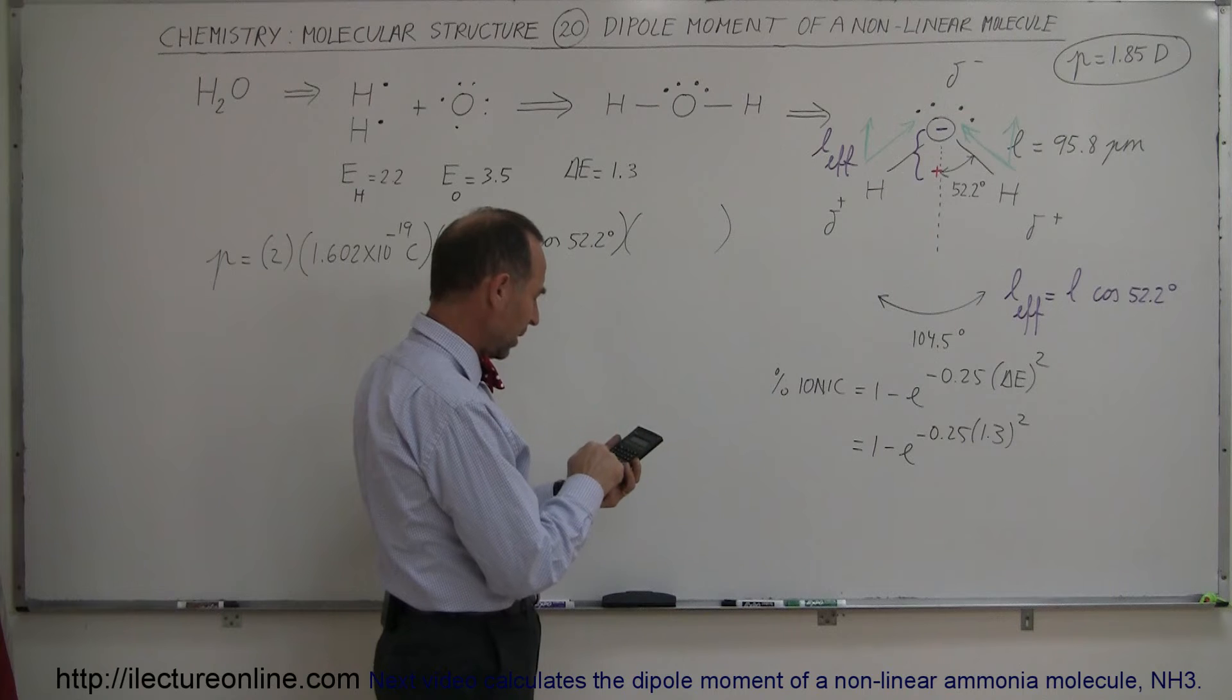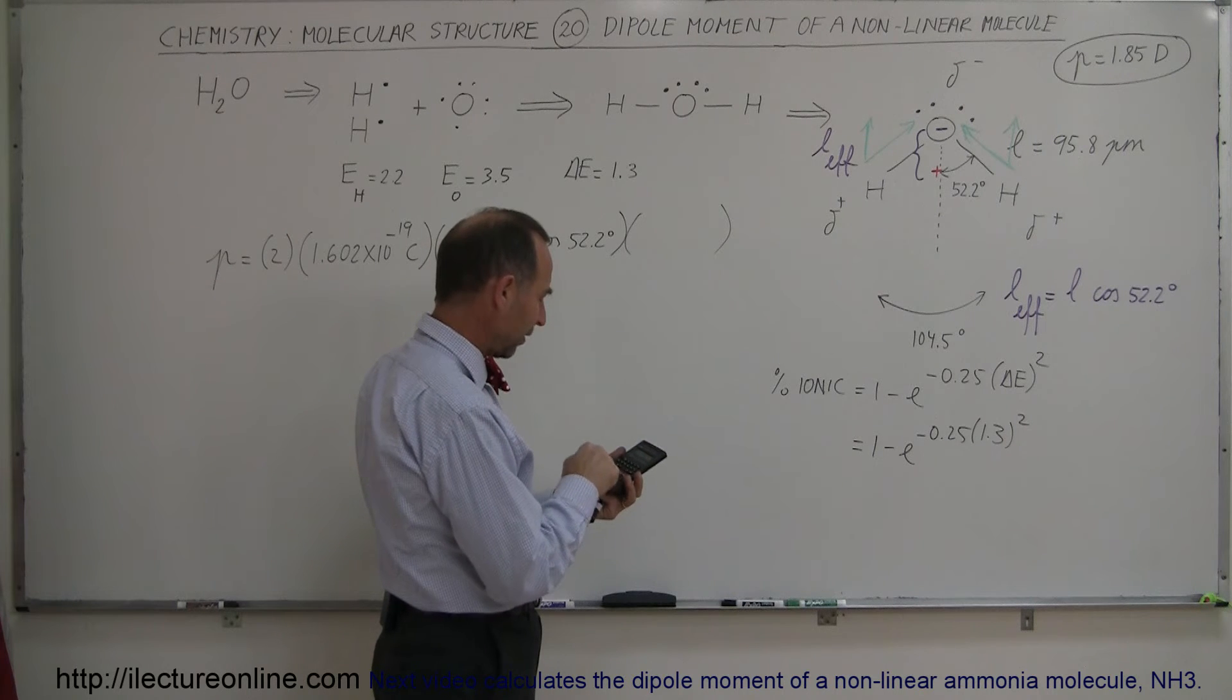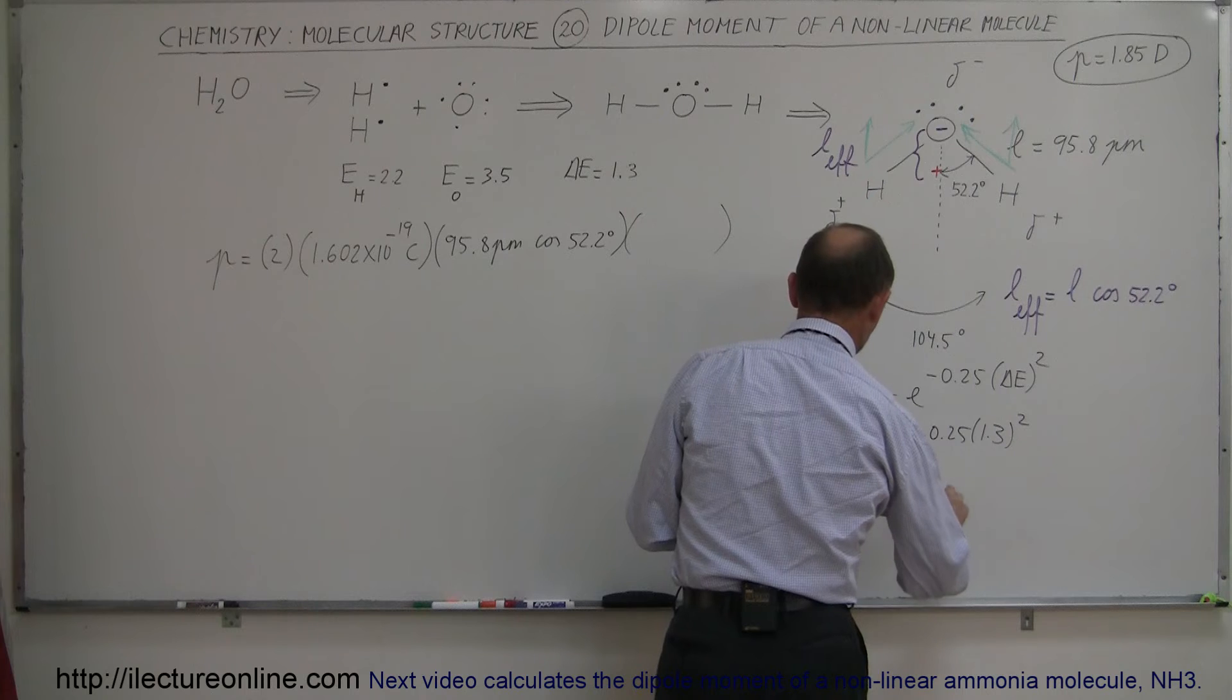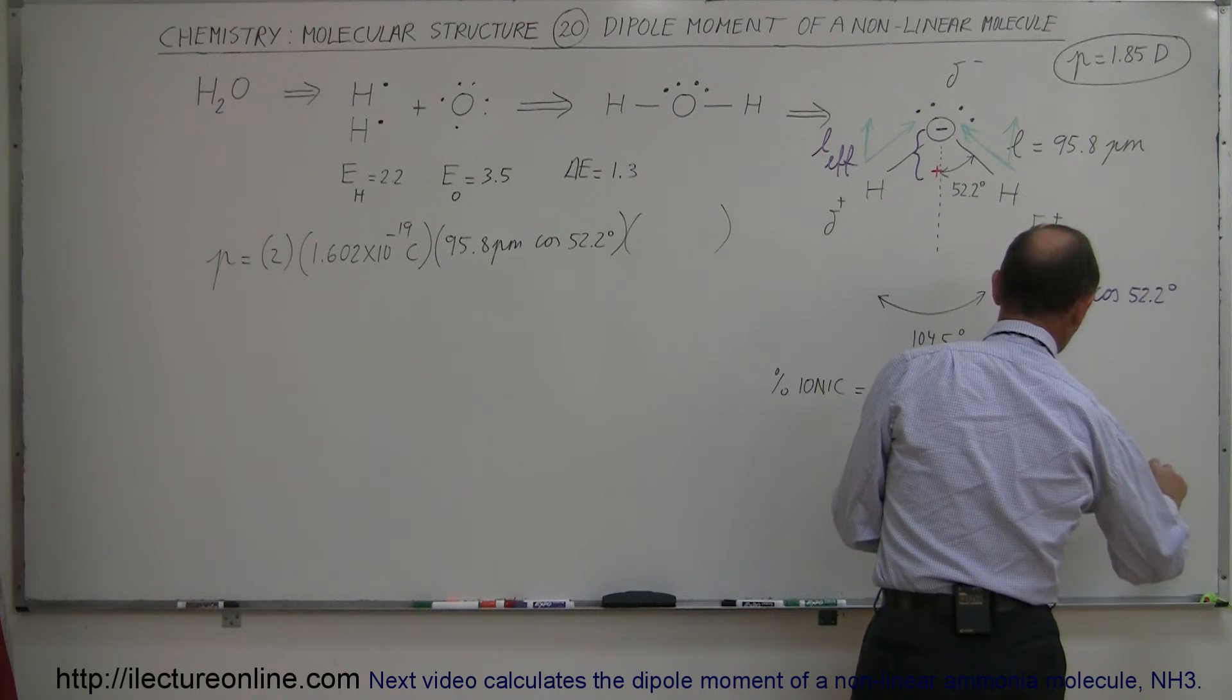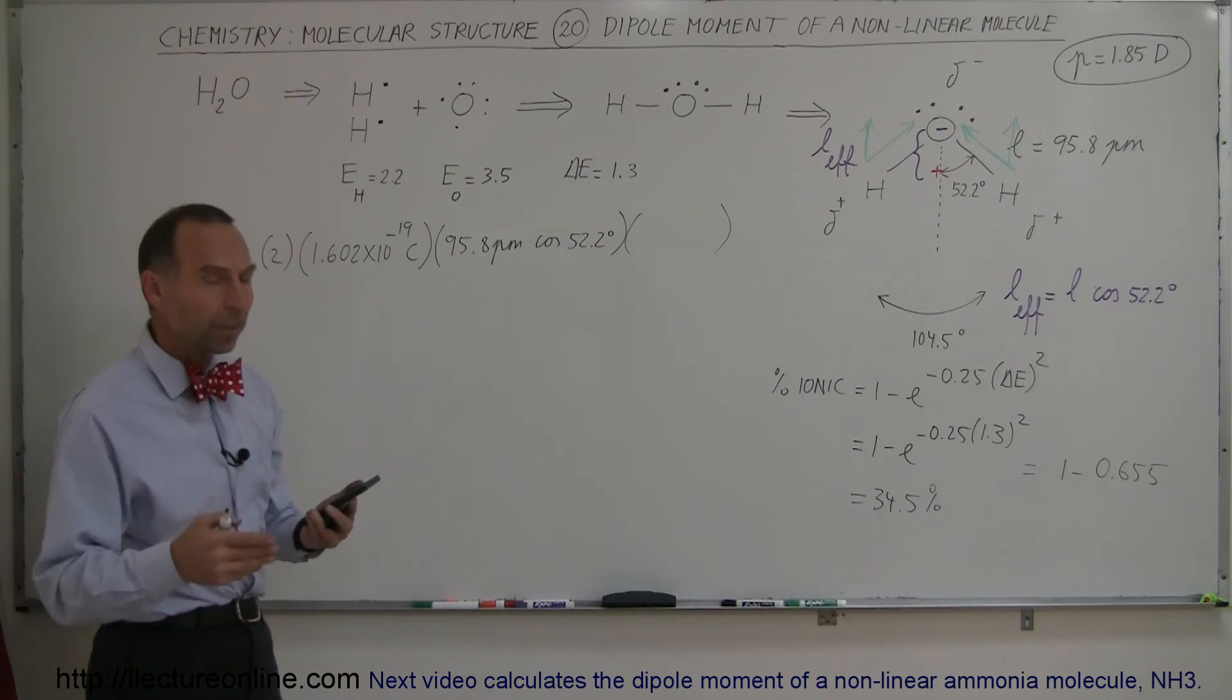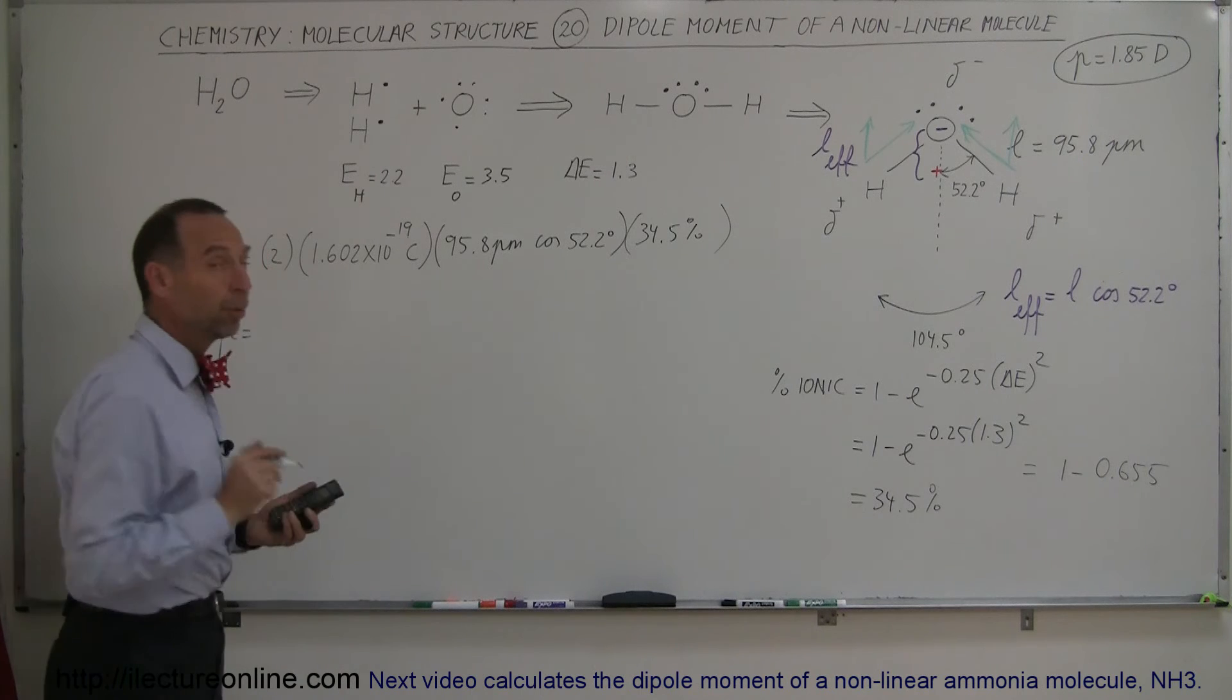So we have 1.3, we square that times 0.25, put a negative in front of that, take it as the exponent, and so subtract that from 1. So we get 34.5%, 34.5%. Because this ends up being is equal to 1 minus 0.655. All right, so the bond between hydrogen and oxygen in a water molecule is only 34.5% ionic. So let's go ahead now and figure out what the dipole moment will be.